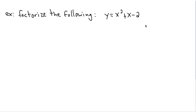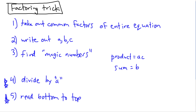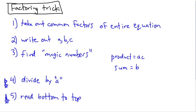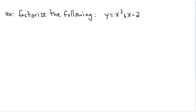In the last video I was showing you some tricks for how to do factoring, or at least I explained the steps in this algorithm. The first step was if you wanted to get from general form to factored form — in other words from ax² + bx + c form into something more useful for finding roots — then we follow this recipe. Now I'm going to show you in context what to do, so first we're going to take out common factors of the entire equation.